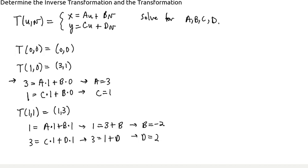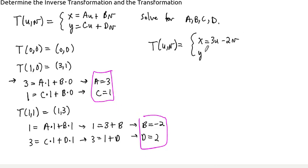Alright? So taking all this information that we just got, solving for these coefficients, we can now write down our transformation. Our transformation T of (u,v) is equal to x equals 3u minus 2v, and y is equal to u plus 2v, and this is our transformation, okay?